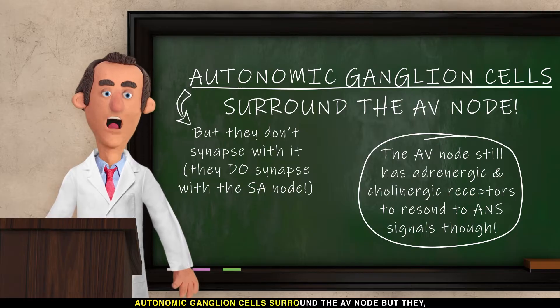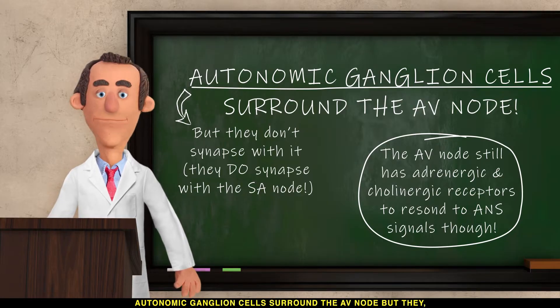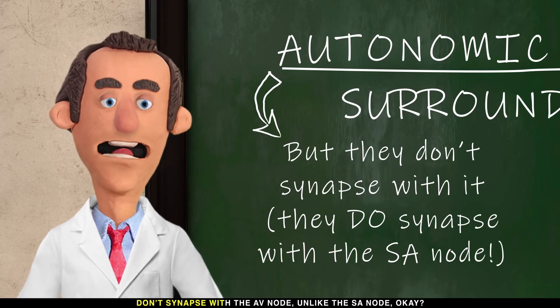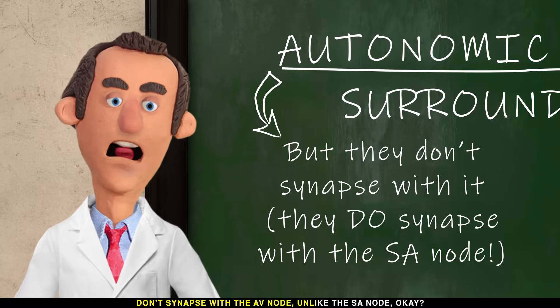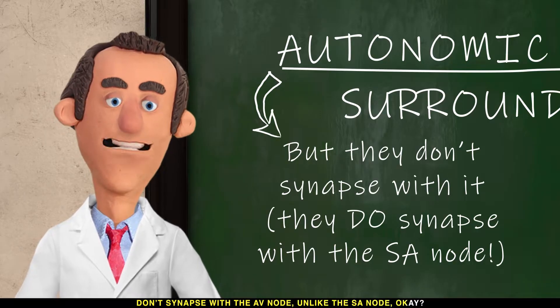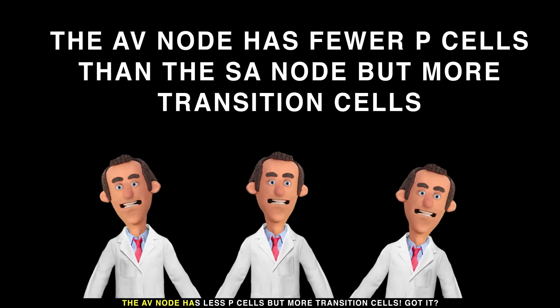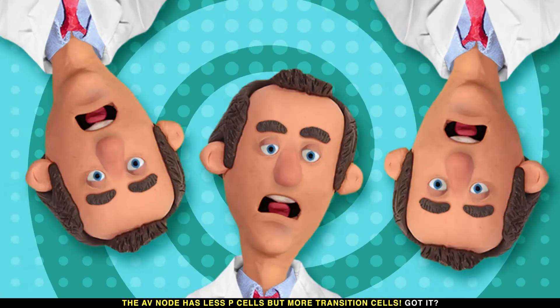Autonomic ganglion cells surround the AV node, but they don't synapse with it — unlike the SA node. The AV node has fewer P cells but more transition cells.